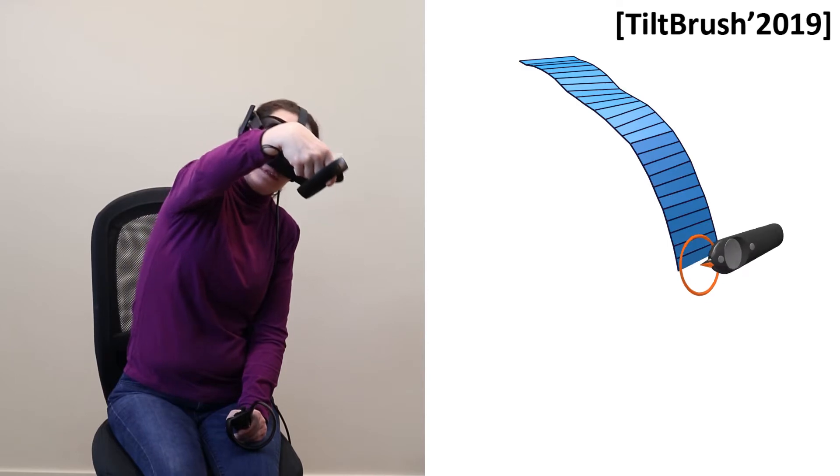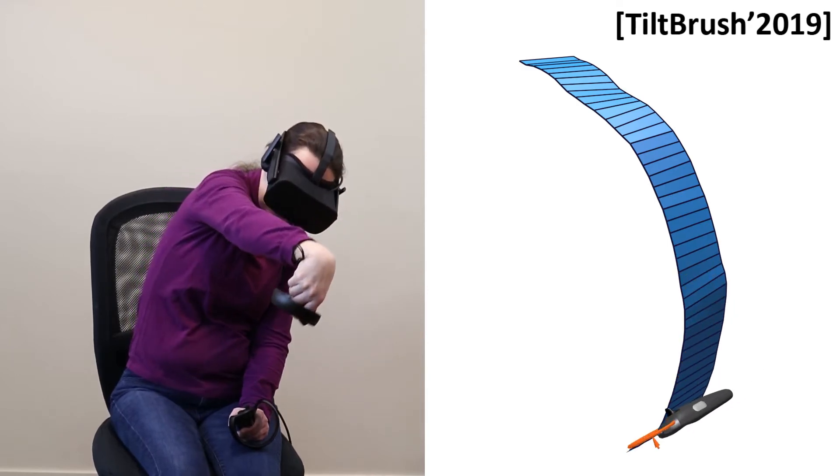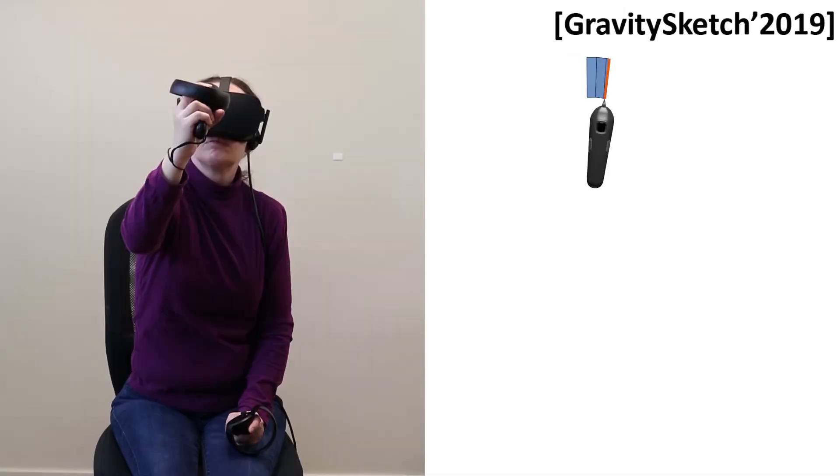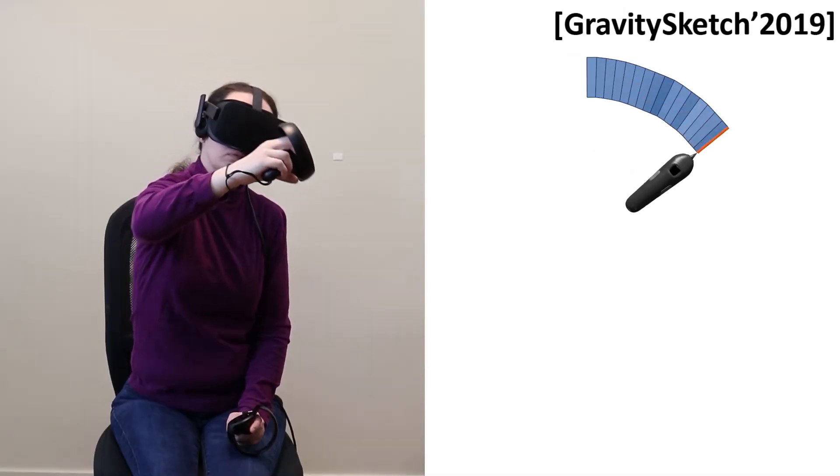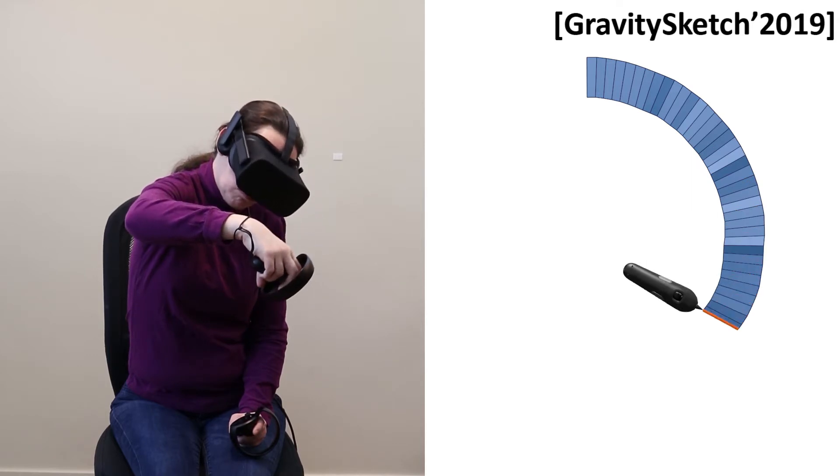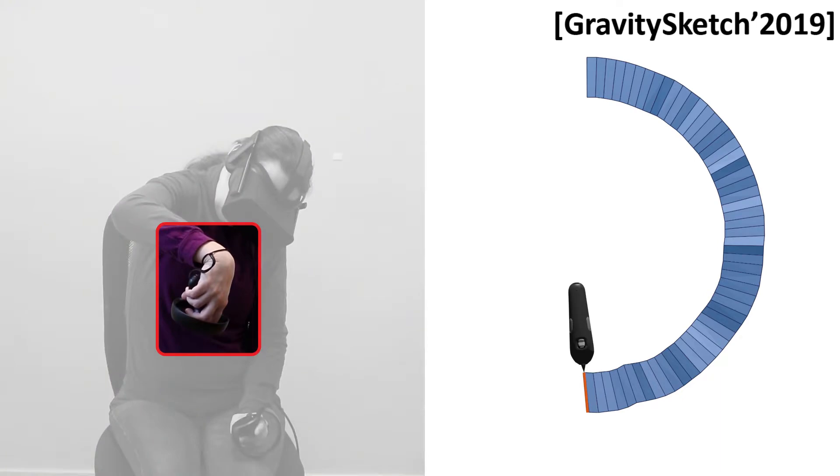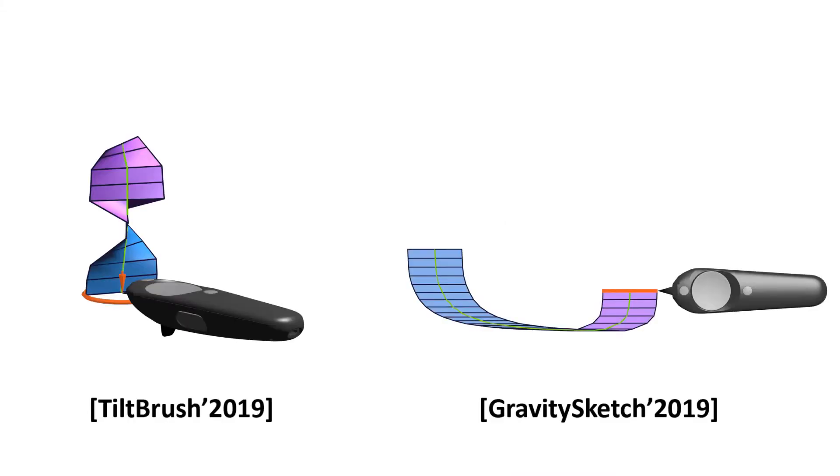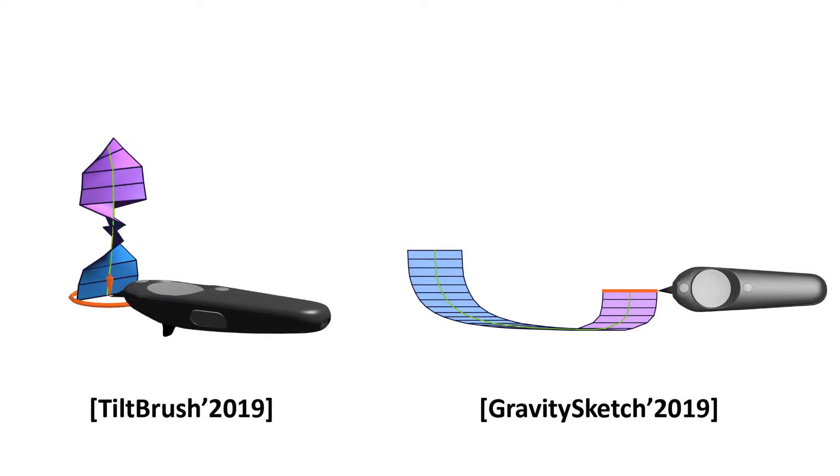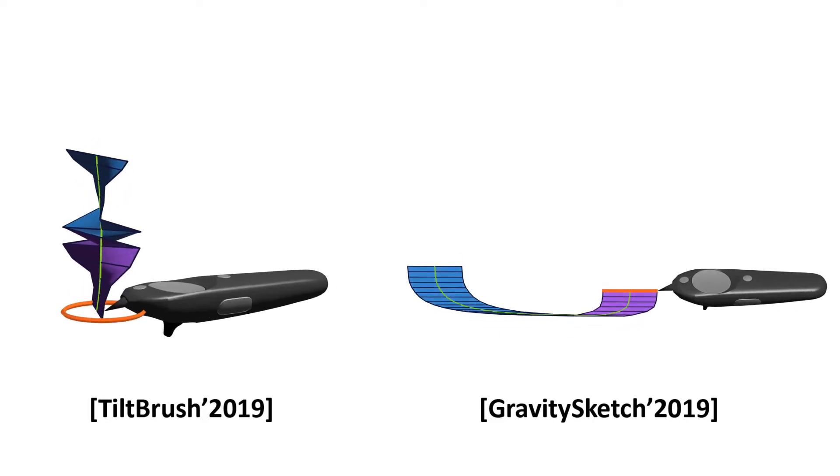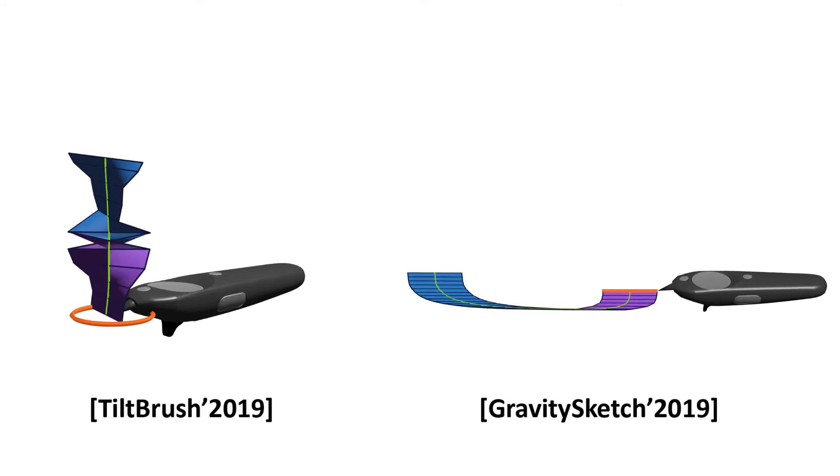Unfortunately, the space of ribbon geometries that can be drawn by existing ribbon brushes is limited by biomechanical constraints on human wrist and elbow motion. Drawing even medium complexity ribbons using these brushes requires users to employ unnatural wrist twisting gestures. Moreover, these brushes can be unpredictable, producing ribbons of unexpectedly varying width or flipped and wobbly normals in response to seemingly natural hand gestures. These limitations decrease the effectiveness and usability of the existing brushes and decrease the quality of the shapes users can draw.